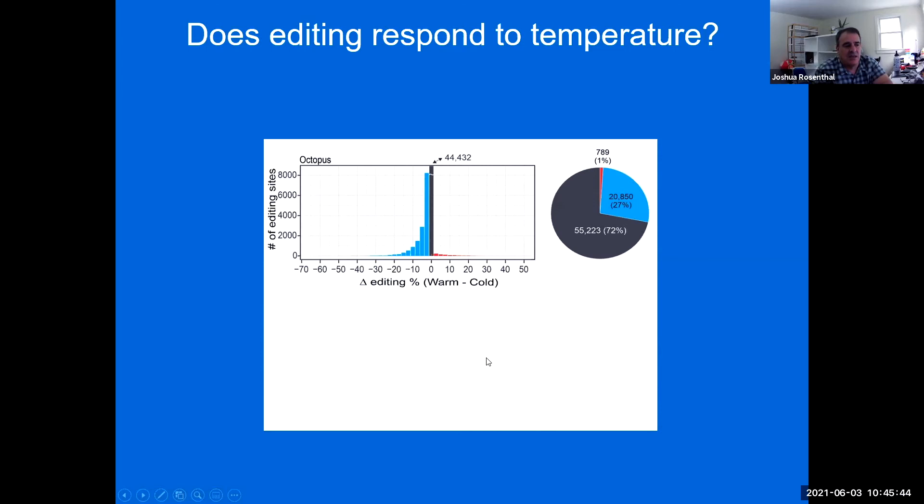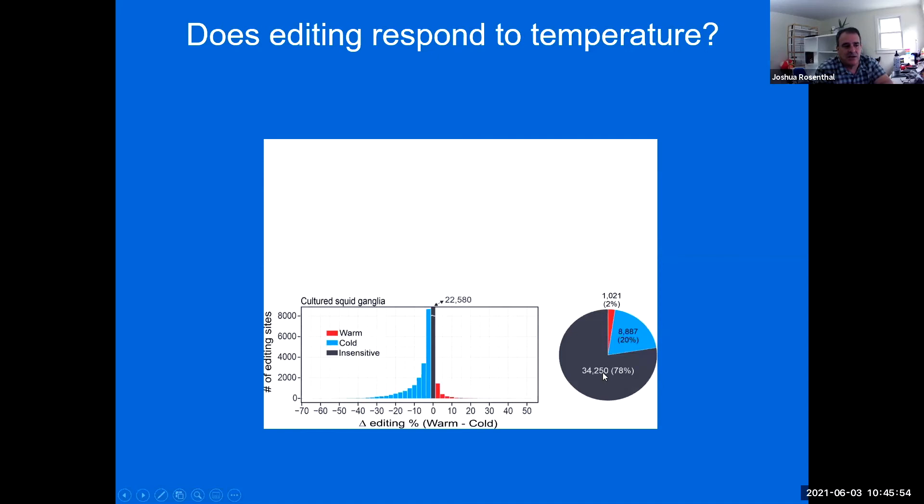We also tried a similar experiment in squid where we dissected out the ganglion and cultured them for a week. And we saw something similar. In this case, roughly about 20% of the editing sites were temperature sensitive. And the vast majority of those were cold temperature sensitive as well.